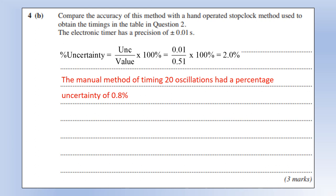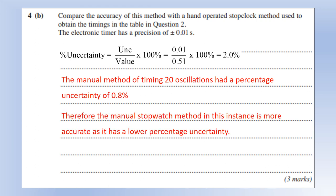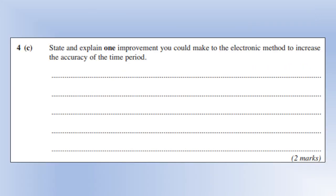So the manual stopwatch in this instance is more accurate because it has a lower percentage uncertainty, and you need those calculations to back up that statement.